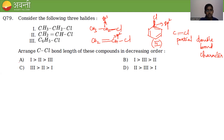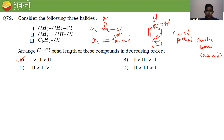More bond order means less bond length. Chlorobenzene has the highest bond order (partial double bond), so it has the shortest C-Cl bond. Ethyl chloride has the longest C-Cl bond (pure sigma). The order is ethyl chloride > vinyl chloride > chlorobenzene. Option A is correct.